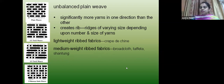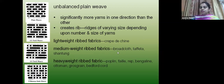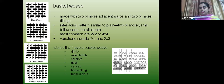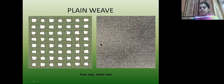The basket weave is made with two or more adjacent warp yarns and two or more filling yarns. There are two warp yarns and two weft yarns — one up, one down. The most common is two-by-two. Fabrics with basket weave include Oxford, sailcloth, ducks, canvas, monk's cloth. In plain weave you see one up, one under; in basket weave the weft is on top of two warps then under two warps. This is the microscopic view of the plain weave fabric and this is basket weave seen under microscope.